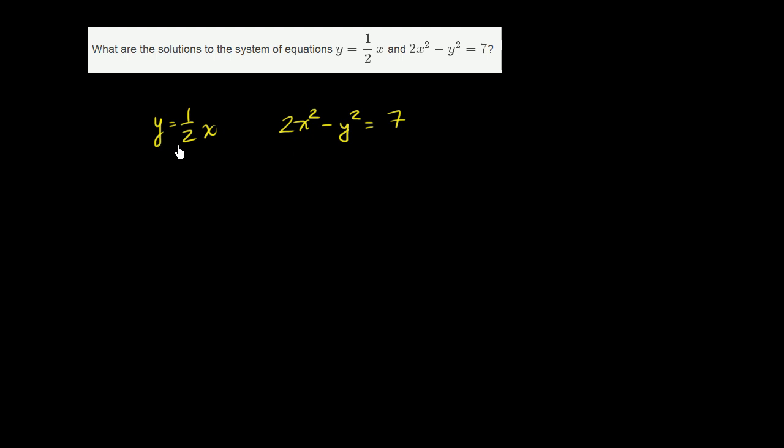It seems easier to substitute 1 half x for y into this equation, because they've already solved for y here. Here, it's much harder to solve for x or y. So let's do that. Every place we see a y here, let's substitute it with 1 half x, and then see if we can solve for x.